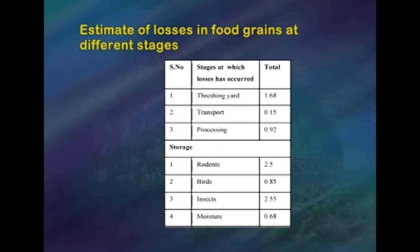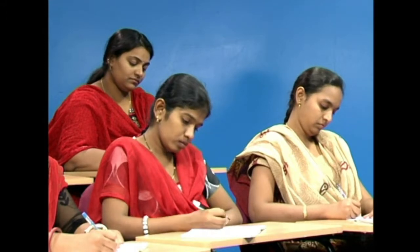Estimates of losses in food grain at different stages: in the threshing yard, loss is 1.68 percent; in transport, 0.15 percent; in processing, 0.92 percent; during storage, loss by rodents is 2.5 percent, by birds 0.85 percent, by insects 2.55 percent, and due to moisture 0.68 percent. The World Food Conference convened in Rome in 1974 drew attention to post-harvest food loss reduction as a significant means to increase food availability. An expert consultation on food loss prevention in perishable crops was held in Rome in 1980.